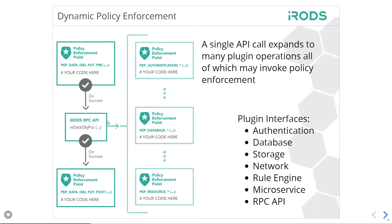A single RPC API call fans out to about 1,200 different operations within the system, each of which may also have policy associated with them. This is where the future-proofness of the system comes into play — we can abstract the infrastructure to move horizontally within the system. If you decide to decommission a storage system, you can simply replicate that data to a new storage system, mark it read-only, and then eventually decommission it.